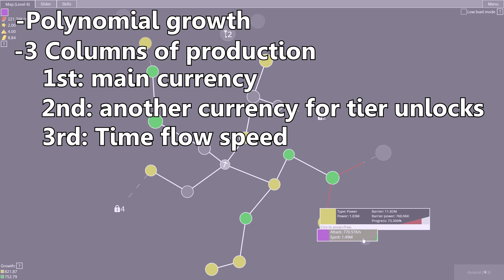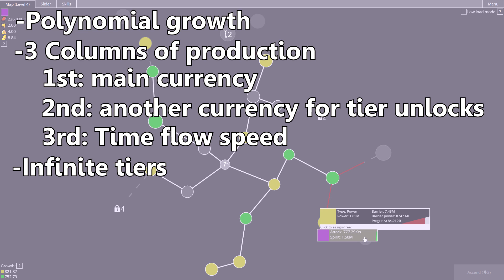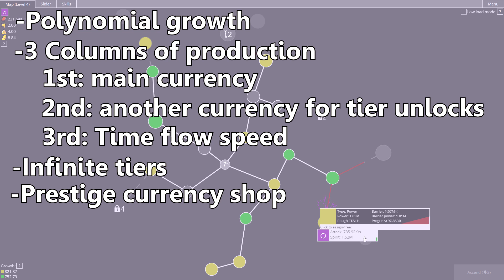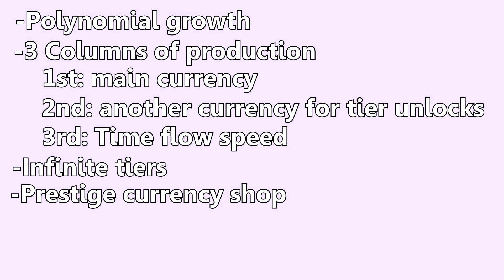So I got another idea — which is totally not stolen from Derivative Clicker — where the last column defines how fast the time in the game flows. It brings a more interesting factor where in the start time flows a second in a millennium, and in the end you go through universe lifespans in a second. The tiers are infinite so you'll always benefit from all the columns. As a prestige mechanic I could go for a basic percentage increase in production based on prestige currency, but that sounds a bit boring and harder to expand, so I'll make a shop where you can use the currency instead.